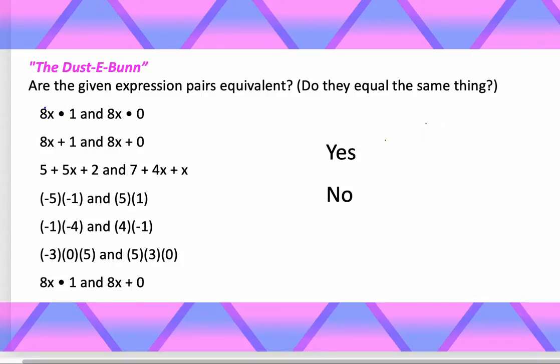8x times 1 is just, well, that's just going to turn into an 8x because times 1 doesn't really do anything. So that turns into 8x. But 8x times 0 completely erases it. So that's just going to be 0. So you are a no. You are not going to be the same thing.